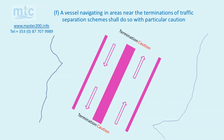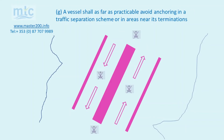A vessel navigating in areas near the termination of traffic separation schemes shall do so with particular caution. This is because terminations of traffic separation schemes are usually areas of very high traffic density. A vessel shall, as far as practicable, avoid anchoring in a traffic separation scheme or in areas near its termination, because these areas are of high traffic density.